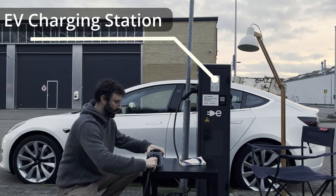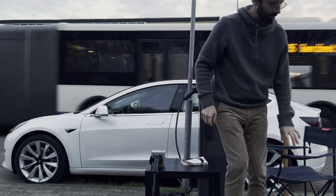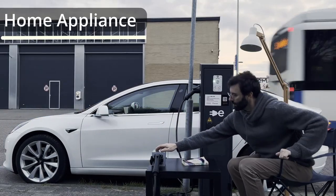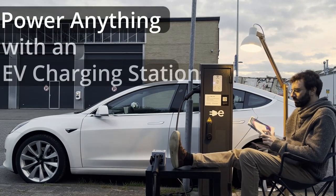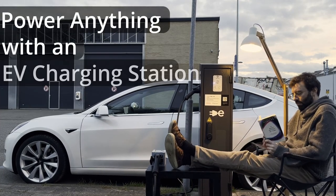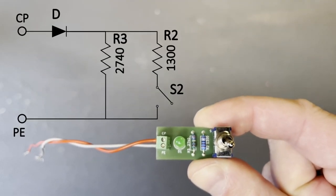This is an electric vehicle charging station and this is a home appliance. You can power anything with an EV charging station. Let me show you how. All you need is a circuit with a diode, the resistors, and the switch.